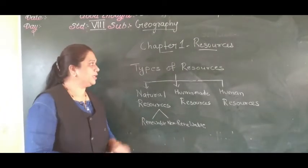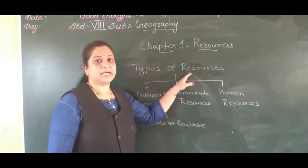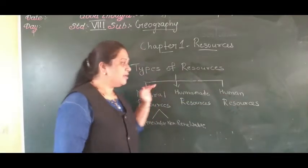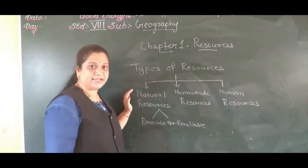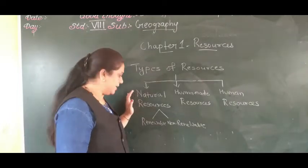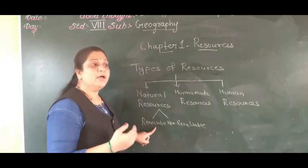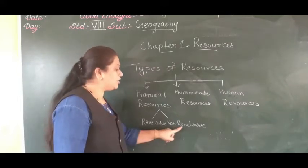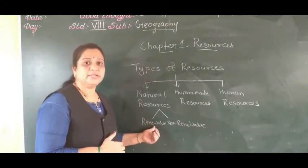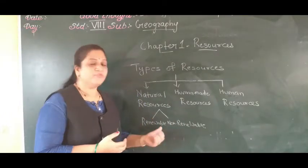Today I have covered the topic: types of resources. To recap, types of resources are classified into three types — natural resources, human-made resources, and human resources. Natural resources are God-gifted and available naturally. They are further classified into renewable and non-renewable resources. Renewable resources can be replenished after use, while non-renewable resources have a limited stock. Even renewable resources can have their stock limited by misuse.